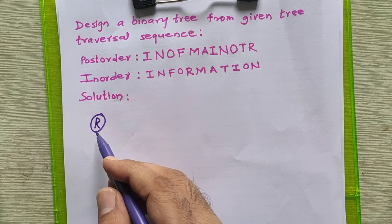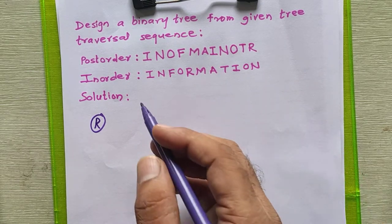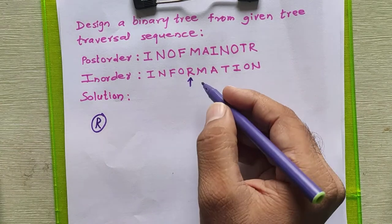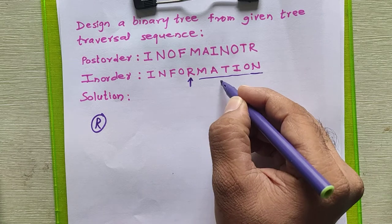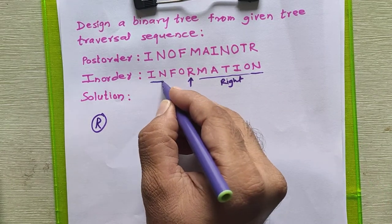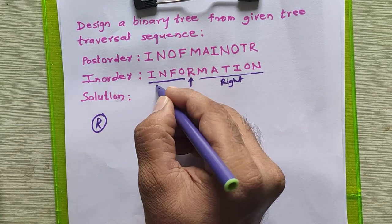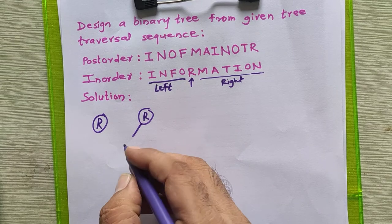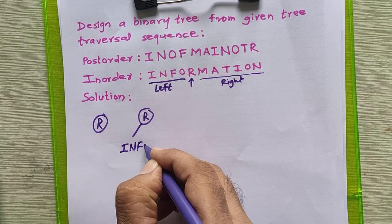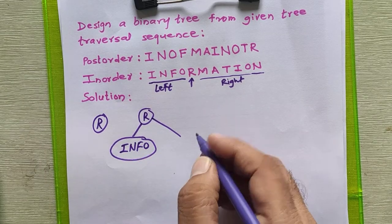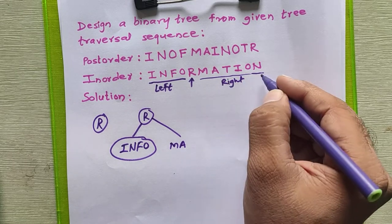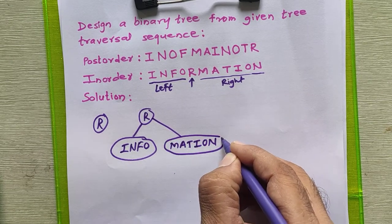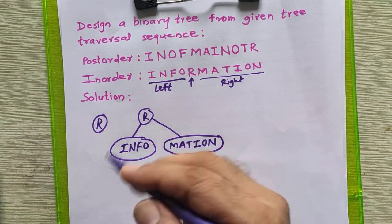After getting the root node, to get the left child and right child of this root node, we will go to the in-order sequence. We will see where the root node appears in the in-order sequence. The part which appears to the right side of the root node is called the right subtree, whereas the part which appears to the left hand side is called the left subtree. We put the left part into the left subtree and the right part into the right subtree. This is your second step.